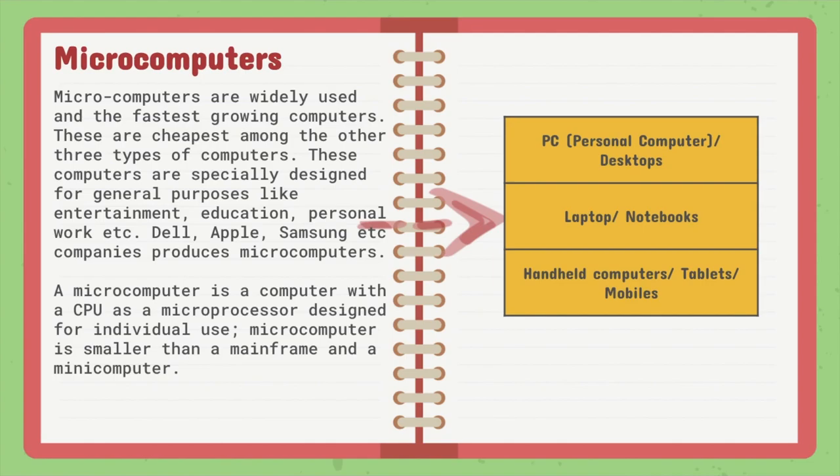Microcomputers are further divided into three categories: PC or desktop, laptop or notebook or handheld computers, and tablets or mobile. The computers we use in our schools for practicals, the mobile we use, and the computer you are using right now are all examples of microcomputers.